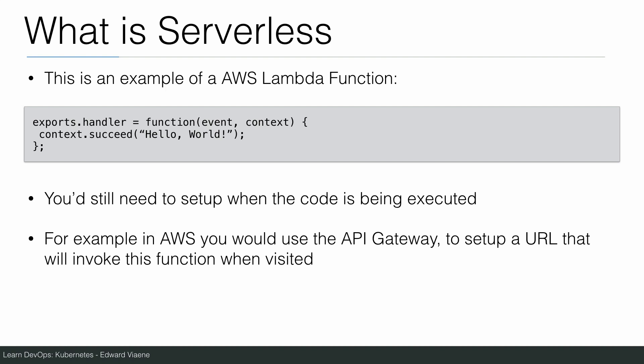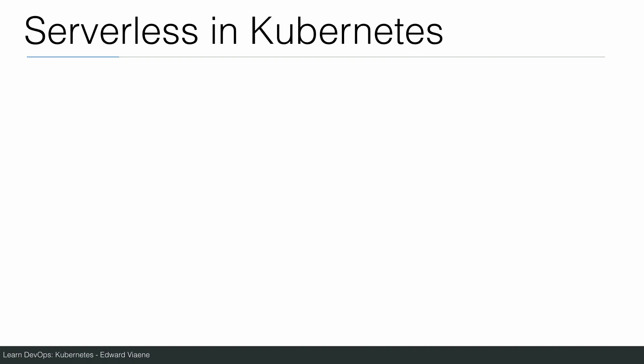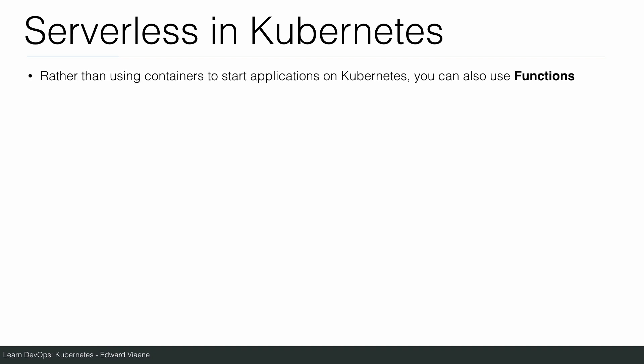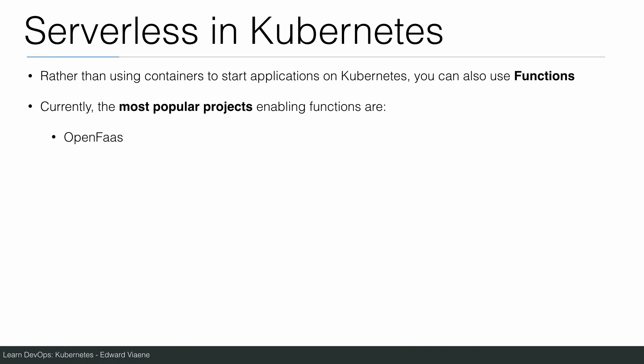So there is still some operational work to get this running. Now, serverless in Kubernetes: rather than using containers to start applications on Kubernetes, you can also use functions like AWS Lambda. Currently, the most popular projects enabling functions are OpenFaaS, Kubeless, Fission, and OpenWhisk. All those projects provide ways to run functions on Kubernetes.